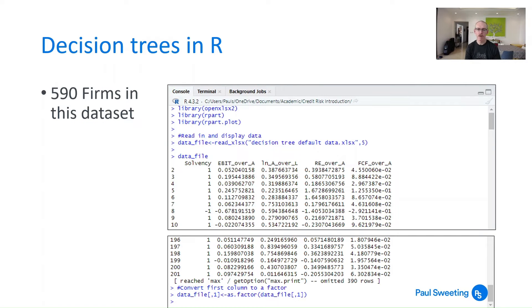So run that code, everything looks right. We've got there 500 firms in this data set and I've converted happily the first column, the solvency column, into factors.